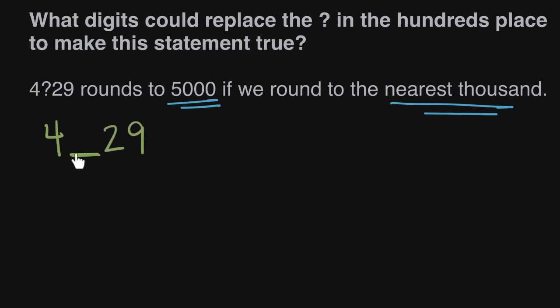So we want to know what digits from zero to nine can we fill in here so that this number is closer to 5,000 than any other thousand. Well the only other thousand this could be close to is 4,000 because we're starting with a four here. All of our numbers will be between 4,000 and 5,000.